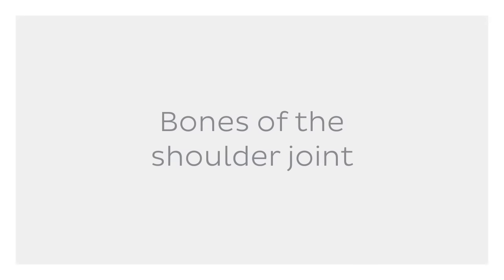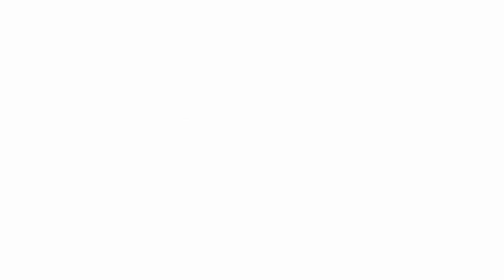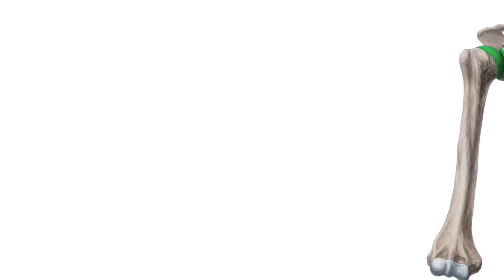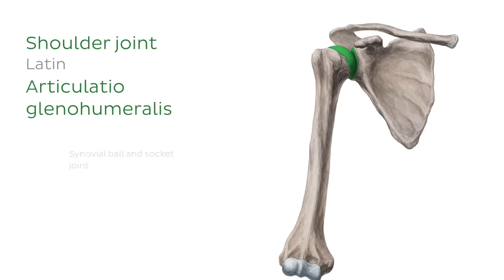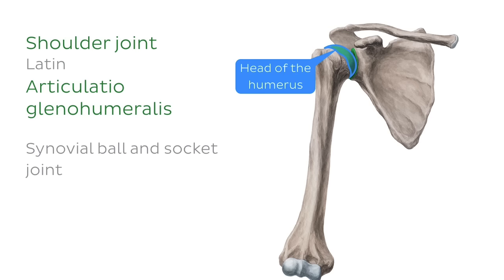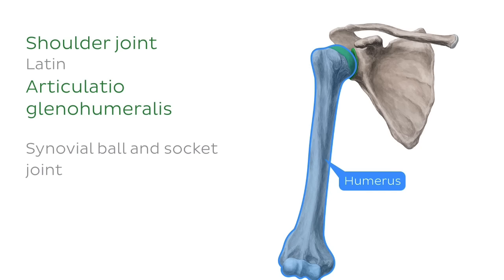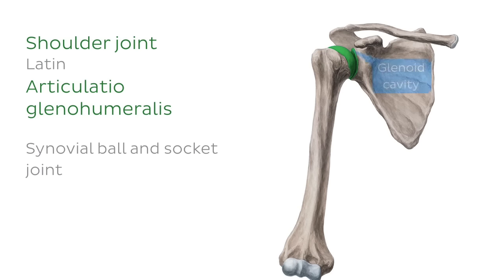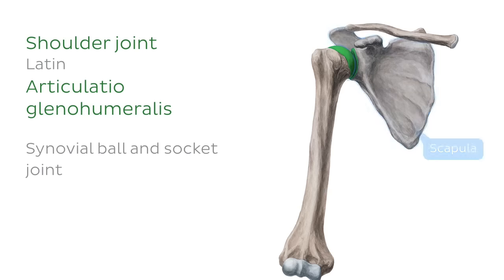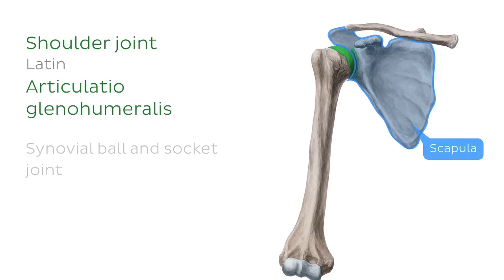Let's get started and talk about the bones of the shoulder joint. The shoulder joint is a synovial ball and socket joint, seen here from an anterior perspective highlighted in green. The ball component is formed by the head of the humerus, which is a feature of the long bone in our arm, whereas the socket component is formed by the glenoid cavity or fossa, which is part of the scapula or shoulder blade. As such, the shoulder joint is also known as the glenohumeral joint.